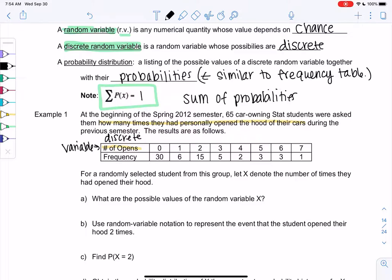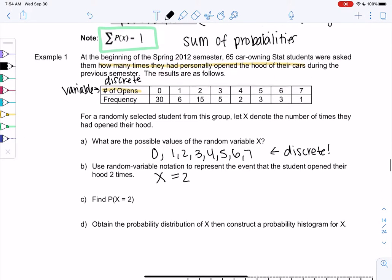So what are the possible values for X? So that would be zero, one, two, three, all the way up through seven. Right? This is discrete. There are gaps. And so if we wanted to use random variable notation, we're just going to use a variable for number of opens. So we want to do the event that a student opened their hood two times. So we're using X for the variable, and it opened two times would be equal to two. So we're just kind of abbreviating now. That's all random variable notation is, an abbreviation.